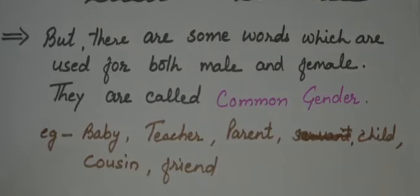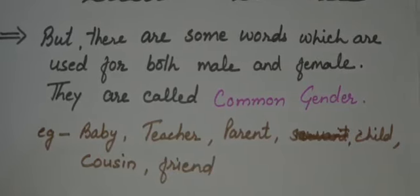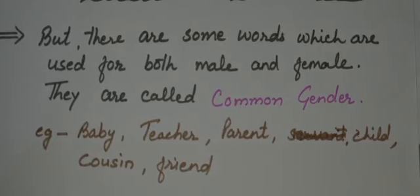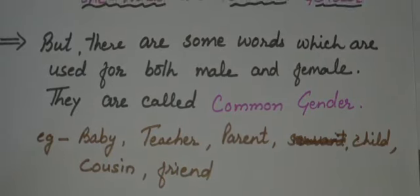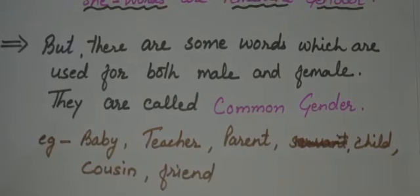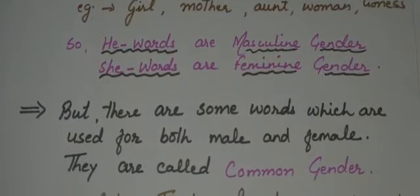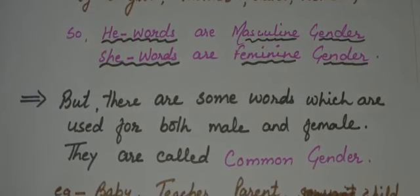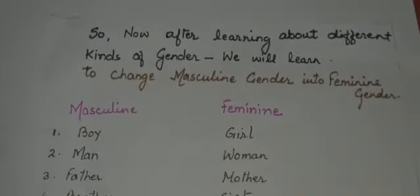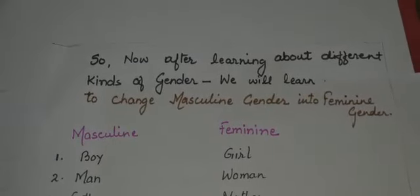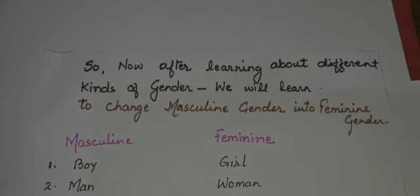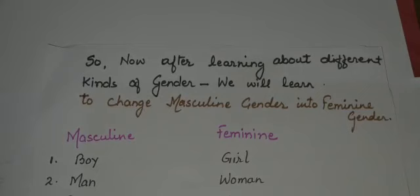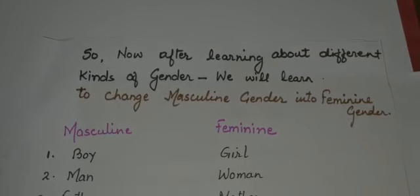So children, now we know that there are three kinds of gender: masculine gender, feminine gender, and common gender. After learning about different kinds of gender, let's see how we can change a masculine gender into a feminine gender. There are different words used for boy and girl.